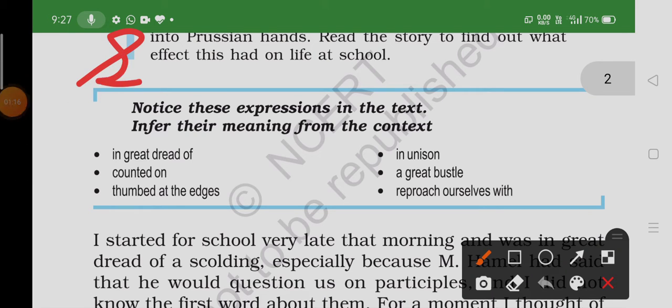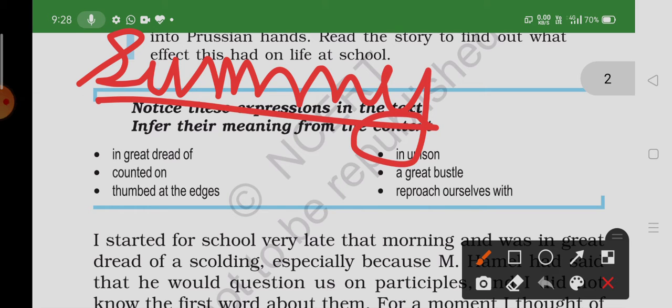Let's see a short summary of this story. Franz is afraid of going to school as he has not learned participles. He wants to enjoy the beauty of nature—the bright sunshine, the birds chirping in the woods, the Prussian soldiers drilling—but he resists.